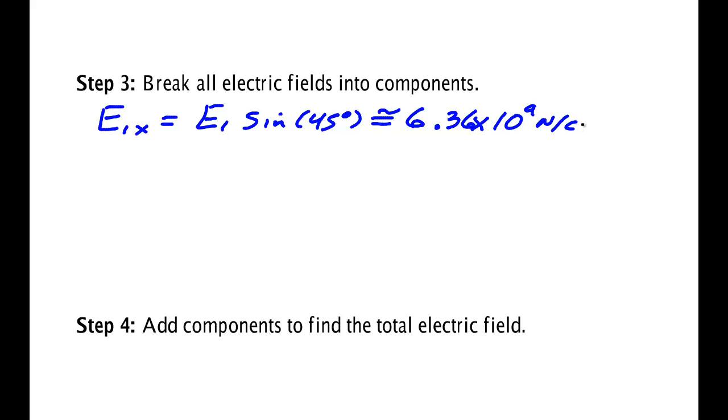Should make sure that I'm in the correct mode. Yes, I am. Okay. Now, it turns out I can do E2x. E2x is minus E2 sine of 45 degrees. And when I do that, I get minus 6.36 times 10 to the 9th newton per coulomb.